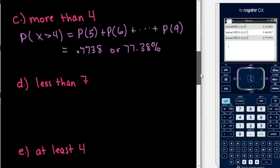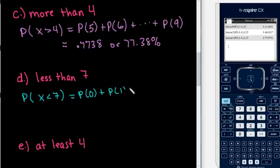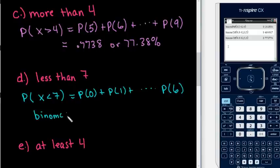A couple more to make sure you understand. The probability that there are less than 7 — in this case it does not include 7, so we stop at 6. It would be the probability of 0 plus the probability of 1 all the way through the probability of 6. We stop at 6 because 6 is the last value below 7. We use binomCDF for more than one value because CDF stands for cumulative distribution function — the sum of all values.